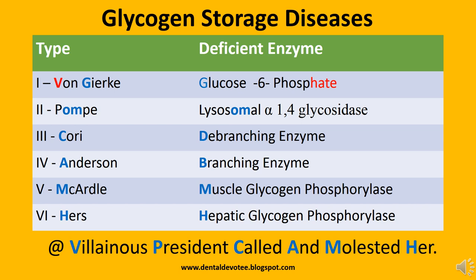For the deficient enzymes: the G in Von Gierke gives glucose-6-phosphatase; for Pompe, the enzyme is lysosomal alpha-1,4-glucosidase. For types 3 and 4, using ABCD — Anderson is for the branching enzyme and Cori is for the debranching enzyme.